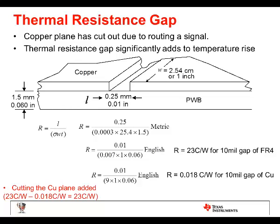Thermal resistance of a gap. We've got a copper plane here that you tied your hot component to, and the heat is starting to spread out. But if somebody routes through it and cuts up the copper plane, just a 10 mil gap increases the thermal resistance by 23 degrees C per watt. So you don't want to cut up your copper plane. Look at the copper plane you're depending on for cooling and make sure there are no cutouts that impede the flow of the heat.